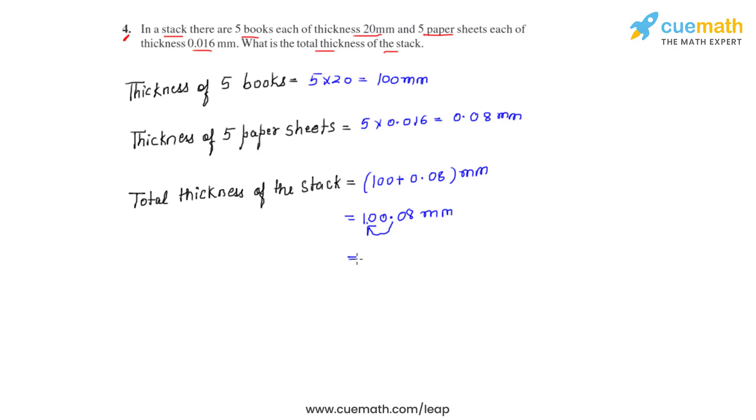So our answer will be 1.0008 times 10 raised to 2. The power is positive because the decimal moved towards left, millimeters. And this is how we solve this problem.